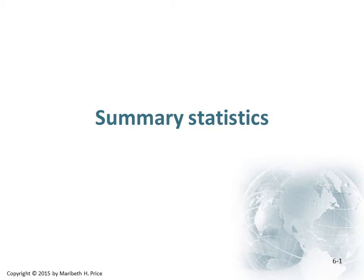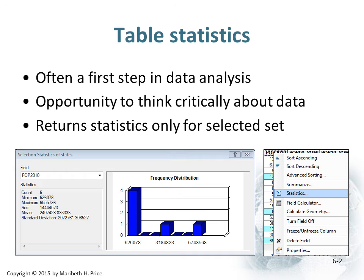Next we're going to talk about calculating summary statistics on attribute data. When we look at our attribute tables, this is typically something you would do as a first step in data analysis. It gives you an opportunity to think critically about your data. It returns statistics only for what is selected, so it allows you to run queries to pull out subsets of your data and run statistics on those subsets. You can go to your dataset, select the field you're interested in, and then click the statistics button highlighted in blue.